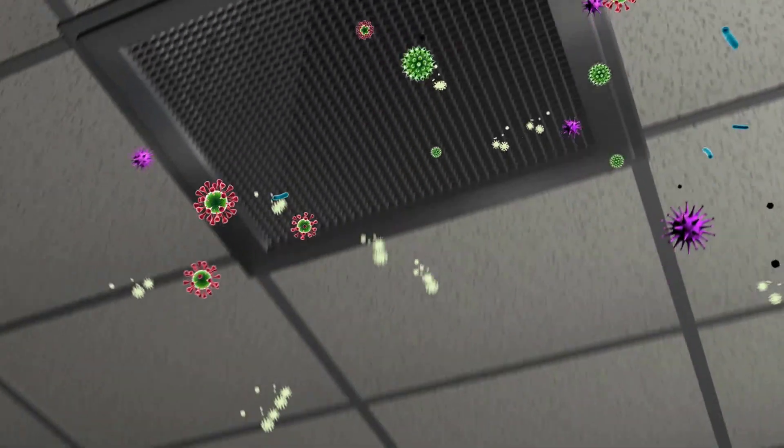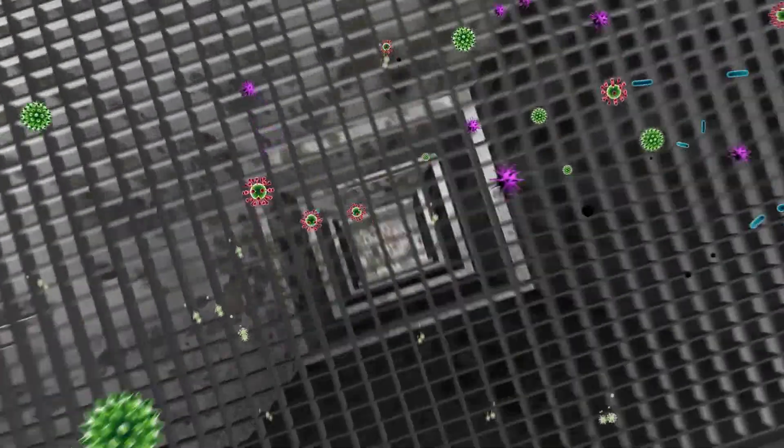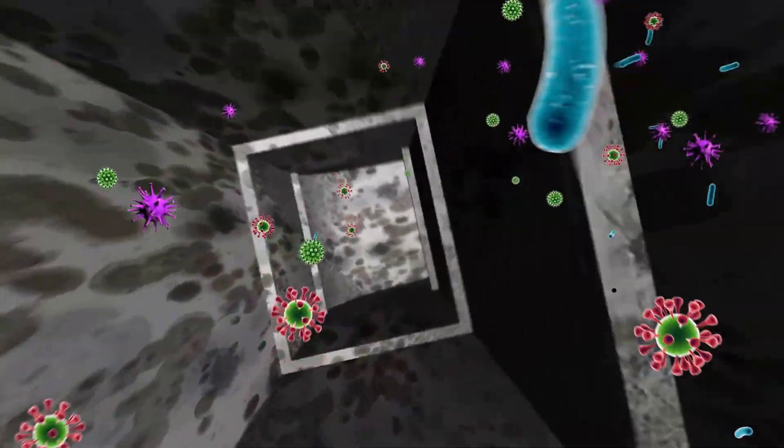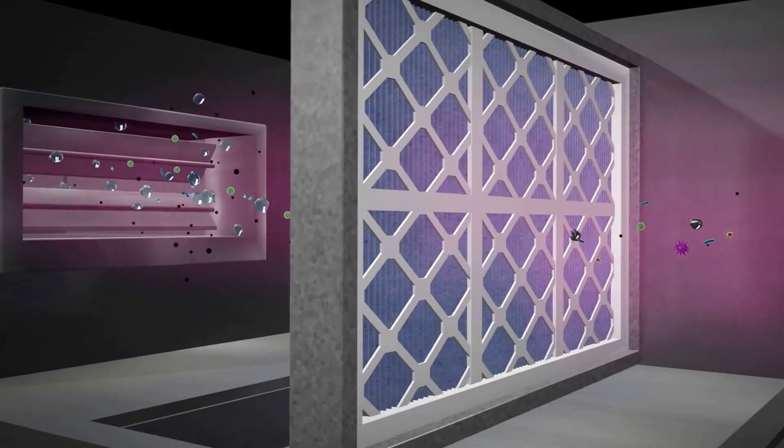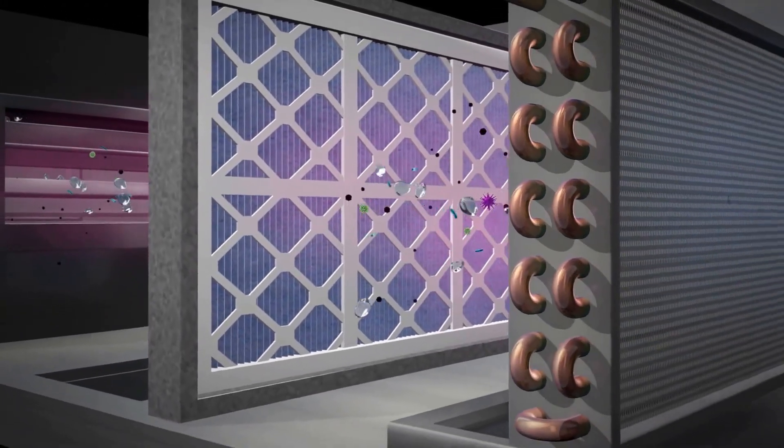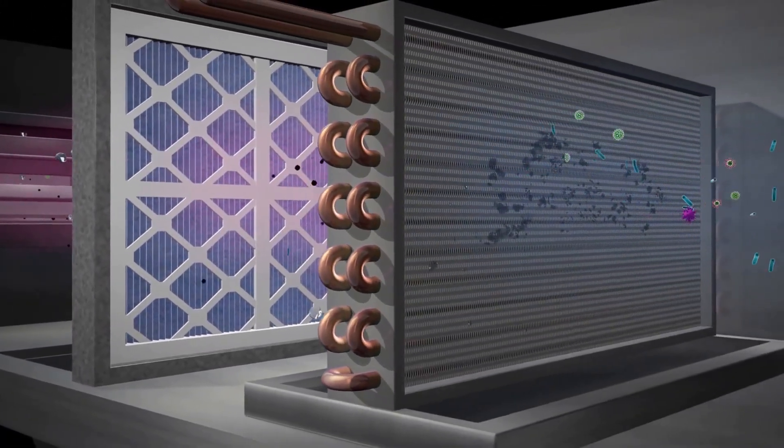Once in the air, the microbes are distributed throughout the building via the AC ducts and pass easily through the primary filters, and cause mild flu or more serious illnesses.